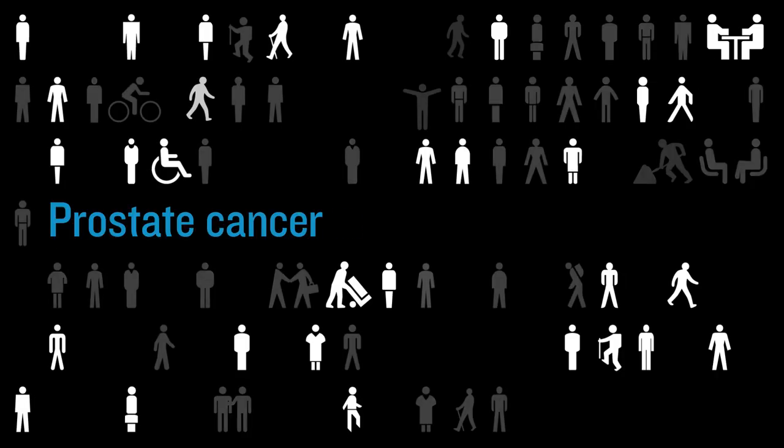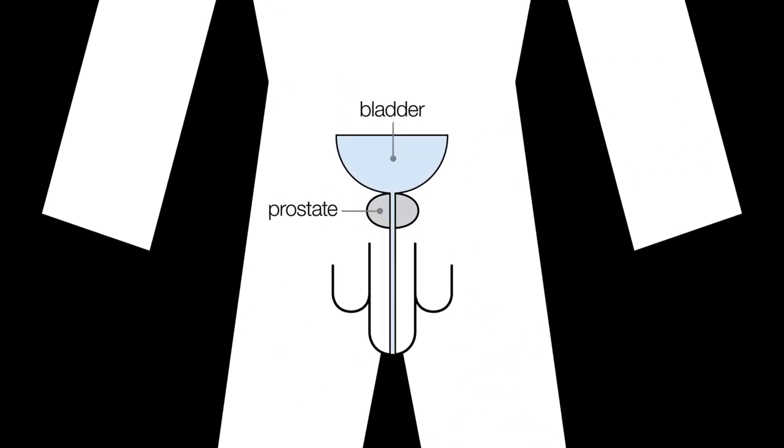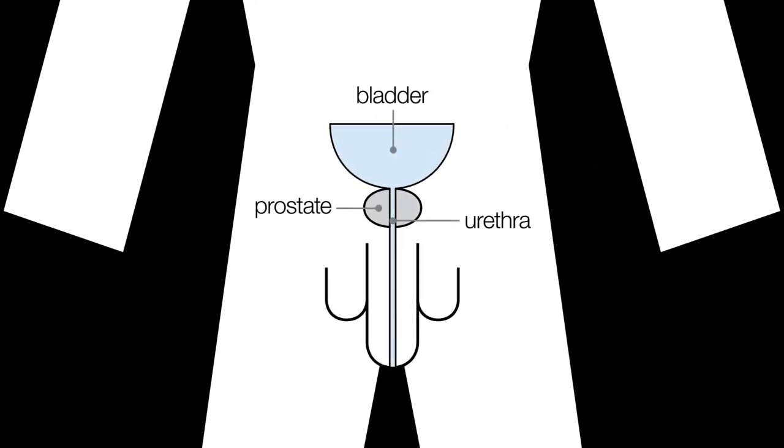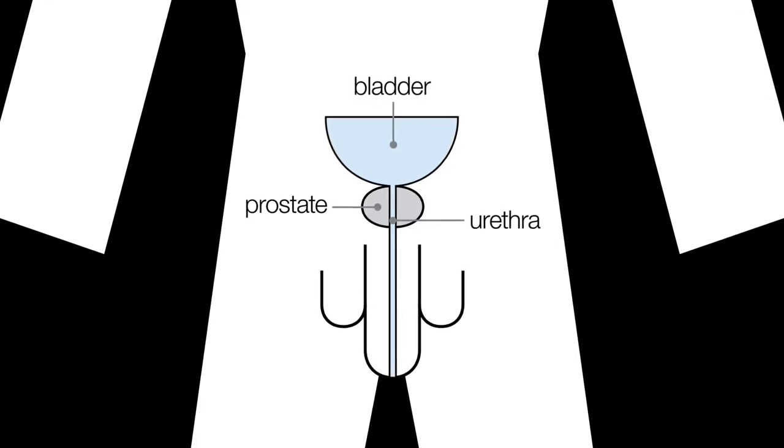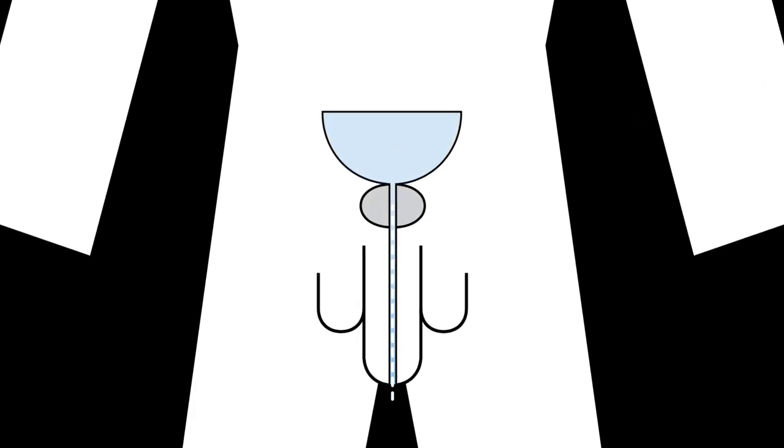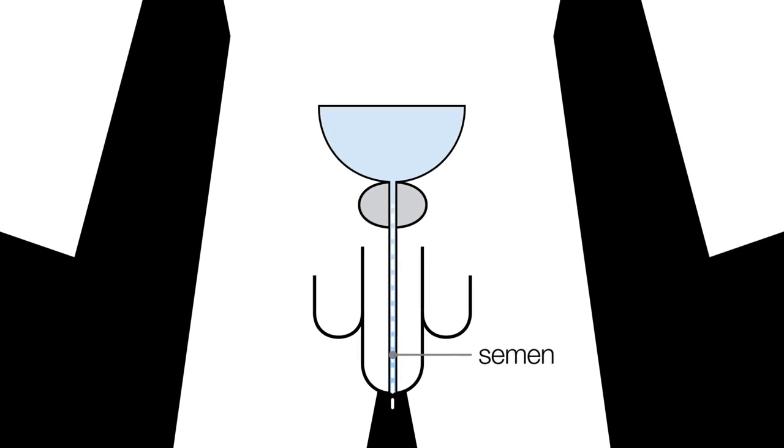Prostate cancer is very common in men. Only men have a prostate. It sits underneath the bladder and surrounds the urethra, the tube men urinate and ejaculate through. The prostate's main job is to help make semen, the fluid that carries sperm.